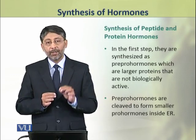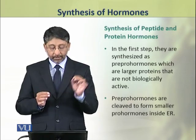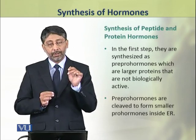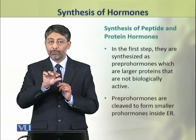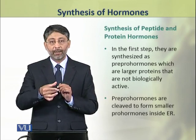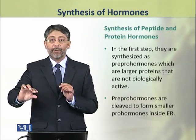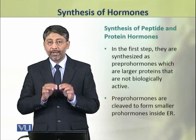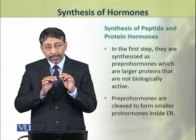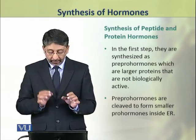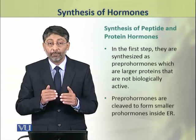These pre-pro-hormones are sent into the lumen of the endoplasmic reticulum. Ribosomes on the endoplasmic reticulum produce them, and after synthesis they move into the lumen of the endoplasmic reticulum. While traveling there, a portion of the pre-pro-hormone is cleaved, and as a result they are converted into pro-hormones.